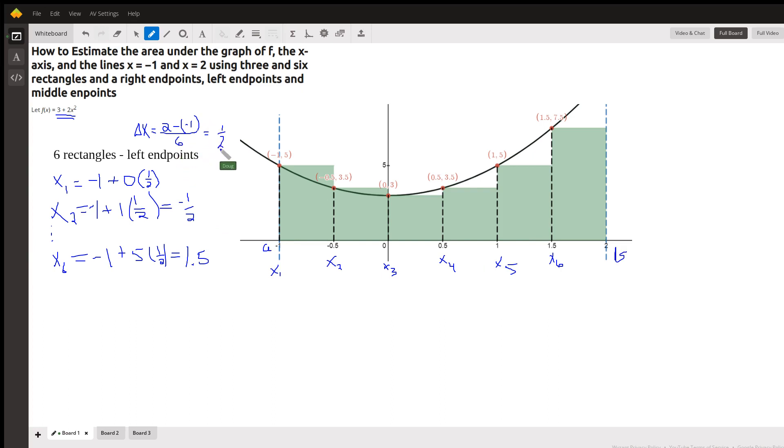So this is the width of each sub-interval, one half. And if you want to find left endpoints, the first we start at one and add these delta x's because we're not moving from here. And x_2 would equal negative one plus one of these right hand endpoints, one of these delta x's.